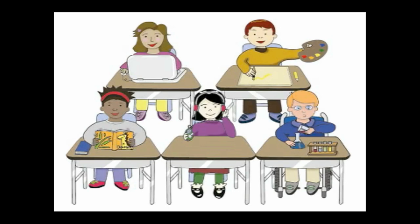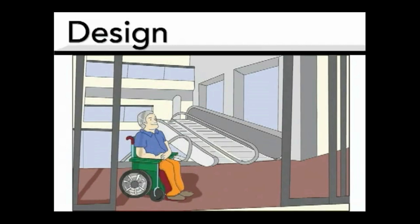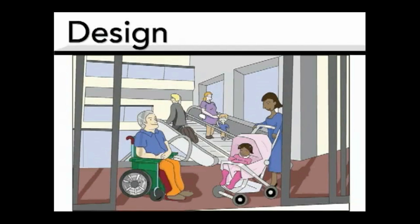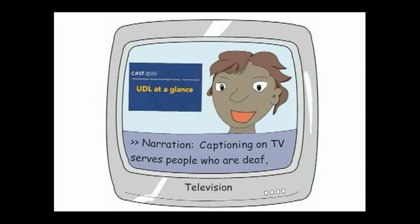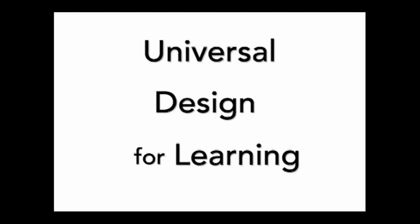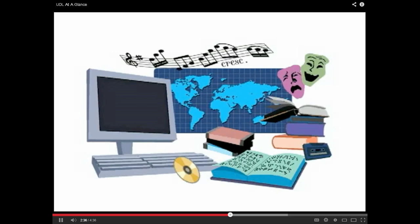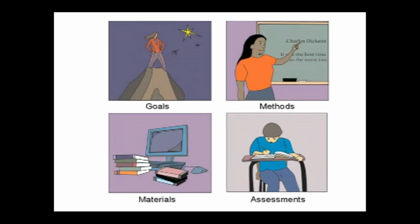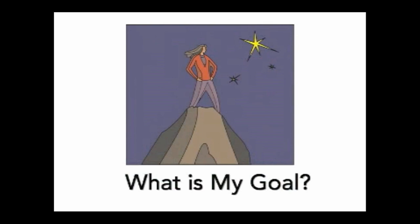This is where the word 'design' comes in. A universally designed building is planned to be flexible and to accommodate all kinds of users, with and without disabilities. If you design for those in the margins, your building works better for everyone. Curb cuts and ramps are used by people in wheelchairs, people with strollers, and people on bikes. Captioning on TV serves people who are deaf, people learning English, people in gyms, and spouses who get to sleep at different times. UDL takes this idea and applies it to the design of flexible curriculum — going beyond access to build in support and challenge.